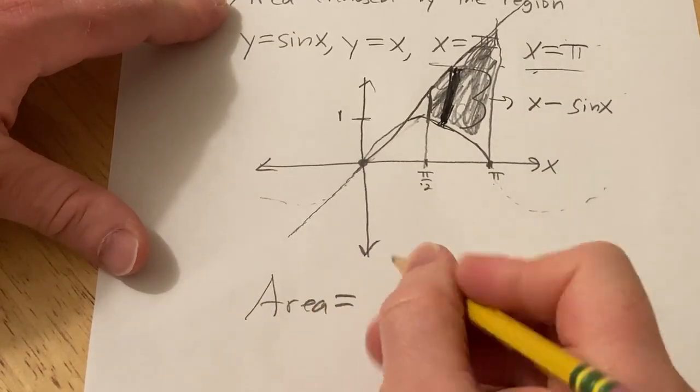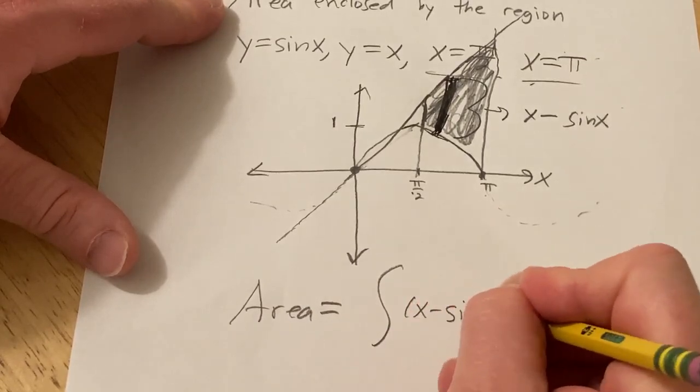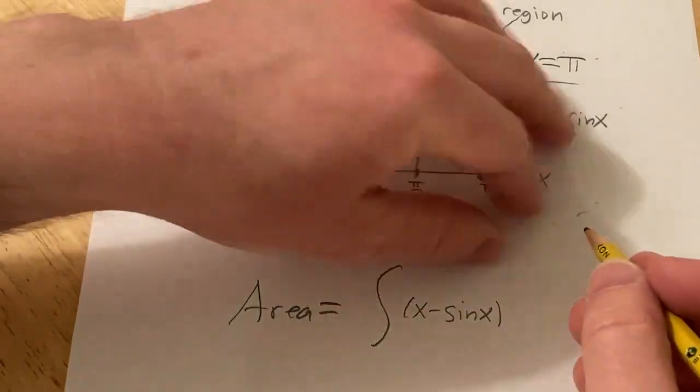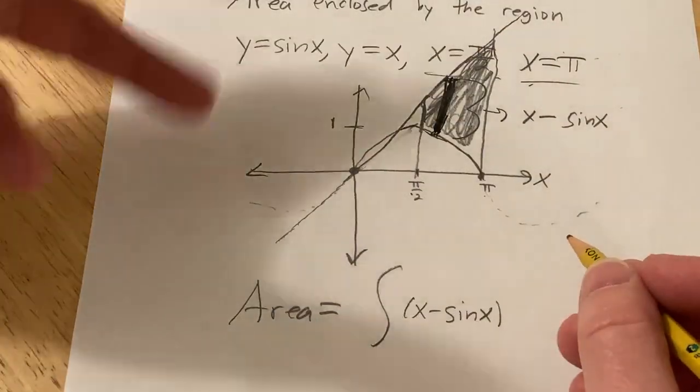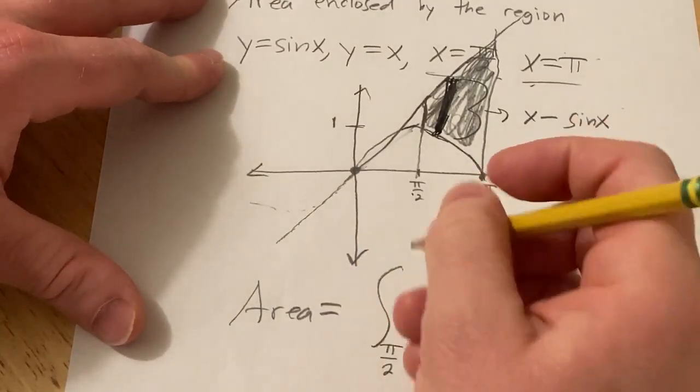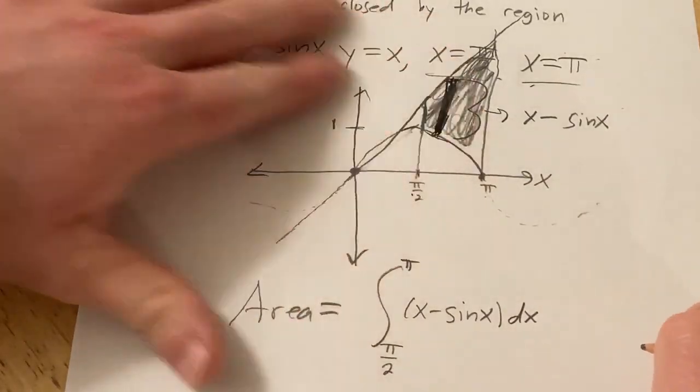So the area is going to be x minus sine x. That's the height of our rectangle at x. It varies, right? So you have infinitely many rectangles, and you add up an infinite sum, which is basically definite integration. And you get the area of this region here.